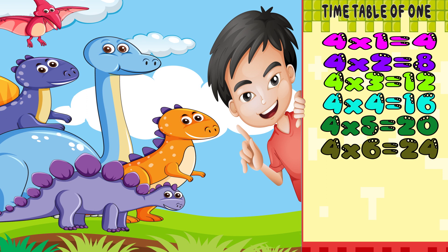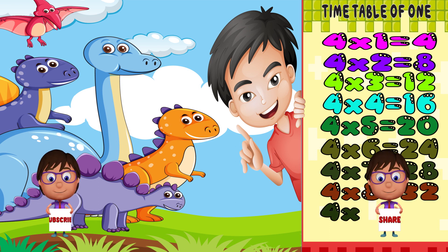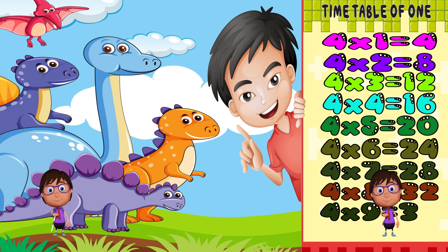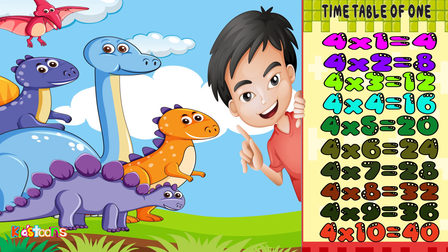4 times 6 is equal to 24. 4 times 7 is equal to 28. 4 times 8 is equal to 32. 4 times 9 is equal to 36. 4 times 10 is equal to 40.